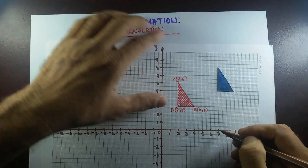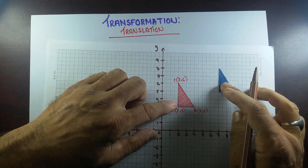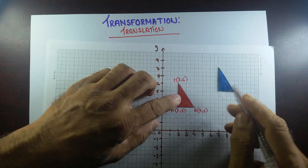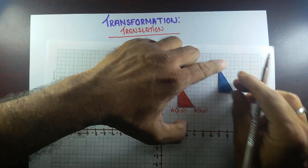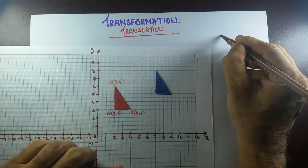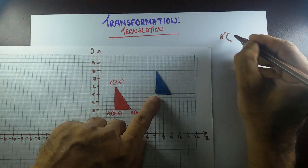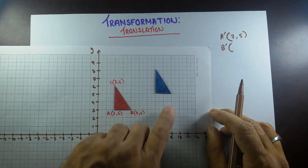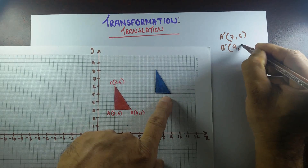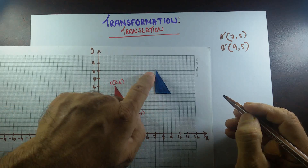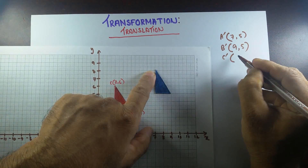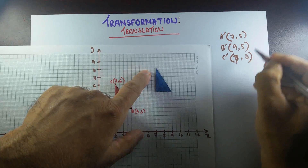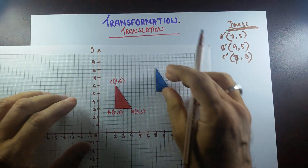Now, let's say I want to transform this triangle to a particular place. When I slide it, point A comes over here — A' is going to be (7,5). B comes over here — B' is (9,5). And coordinates of C' would be (7,8). Okay, this is our image, the coordinates of the image.